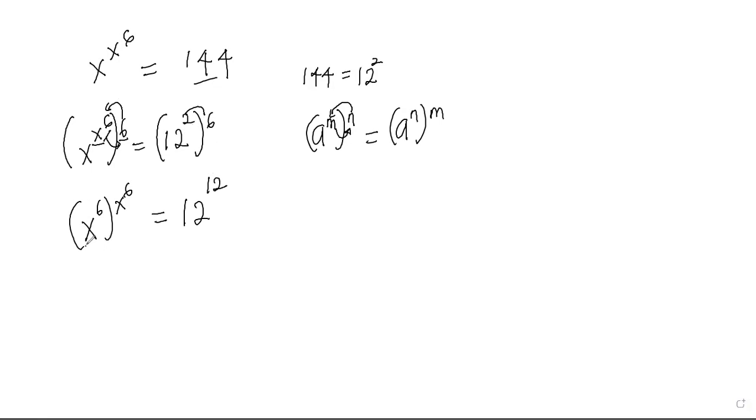Now you can see that the base here is the same as the power, and in the right hand side the base is the same as the power, so we can equate each of them. You can see that conclusively x to the power 6 is equal to 12. Now at this point to take away 6 from this power of x, we take the sixth root of both sides.